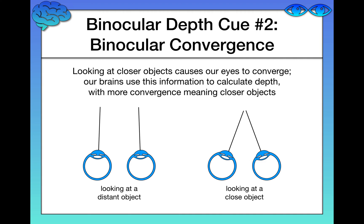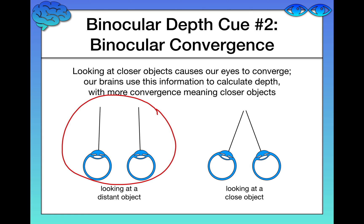Last but not least, we have the binocular depth cue of convergence. When you brought your thumb close to your face during the demonstration, you probably felt a little pressure in your eyes — that's your eyes converging to fixate on your thumb. To focus on something close, your eyes have to come together; looking at something far away, they don't converge much. Your brain judges that physical pressure: if converging a lot, the object is very close; if not converging at all, the object must be very far away.